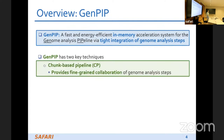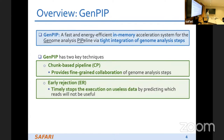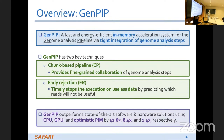GenePIP has two key techniques. The first is the trunk-based pipeline, which provides fine-grained collaboration of genome analysis steps. The second is early rejection, which timely stops execution on useless data by predicting which reads will not be useful. GenePIP outperforms state-of-the-art software and hardware solutions using CPU, GPU, and optimistic PIM by 41 times, 8 times, and 1.4 times respectively.